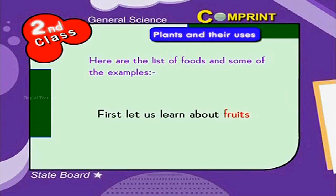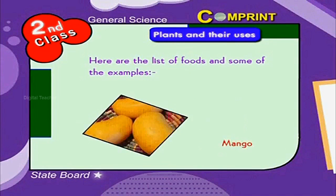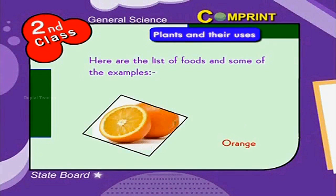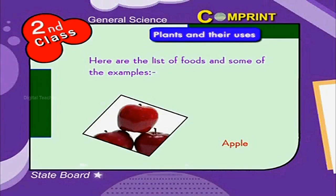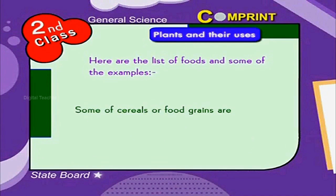First, let us learn about fruits. Fruits are the fleshy parts of the tree and give nutrients to us — like mango, grape, orange, guava, apple, banana, lemon and so on.